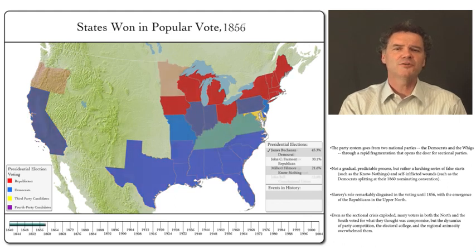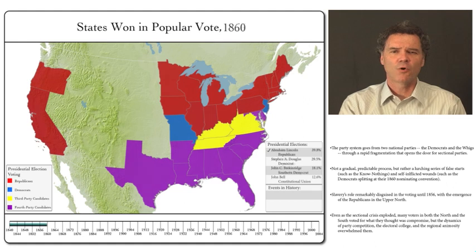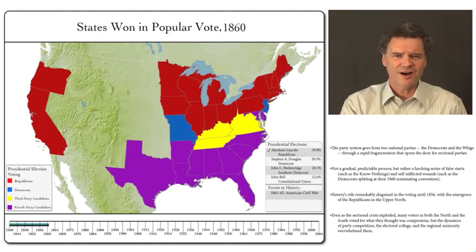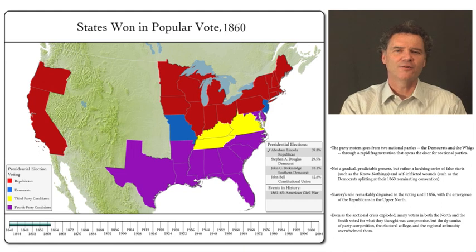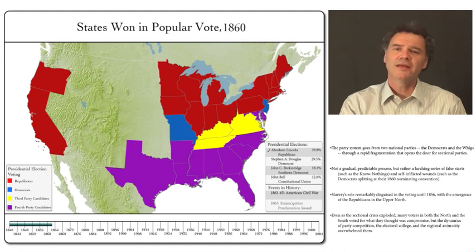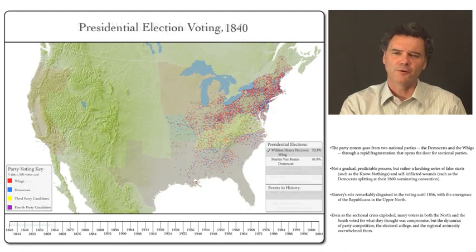When we let the electoral college map move forward into 1860, of course, all hell has broken loose. What are all those colors? Let's go back and look at it from another angle — more detailed and supple — in the popular vote.